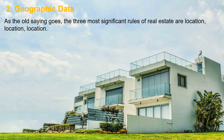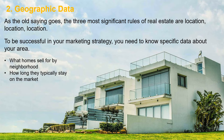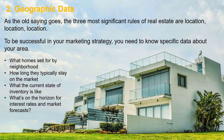Number two: geographic data. As the old saying goes, the three most important rules of real estate are location, location, location. To be successful in your marketing strategy, you need to know specific data about your area — what homes sell for by neighborhood, how long they typically stay on the market, the current state of inventory, and what's on the horizon for interest rates and market forecasts, both geographically and nationally specific. Once you know more about the cities, counties, and neighborhoods in which you're working, your real estate marketing efforts will make a lot more sense.